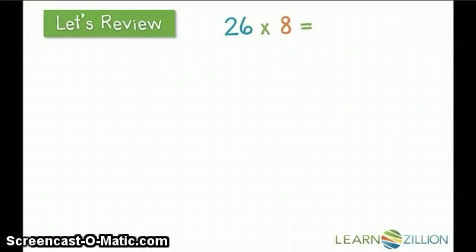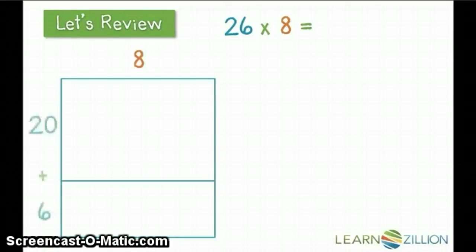Let's look at it another way. This says we're finding the total of 26 groups with eight in each group. This time, instead of expanding the amount in each group, I'm expanding the amount of groups to 20 and 6. Now it's the same process as before.